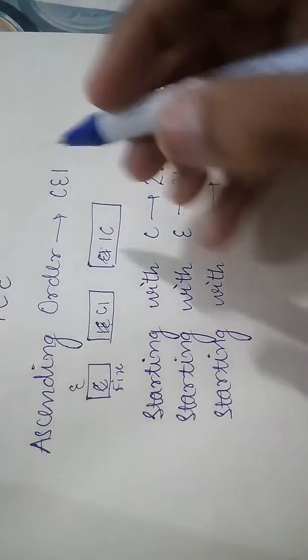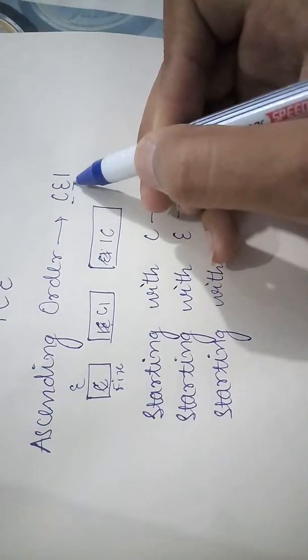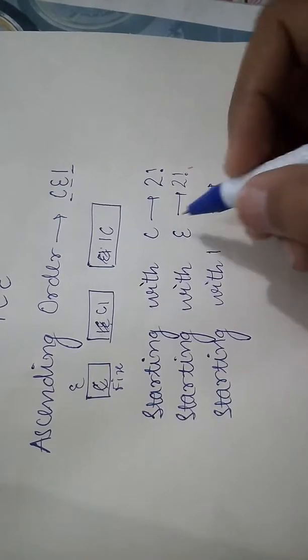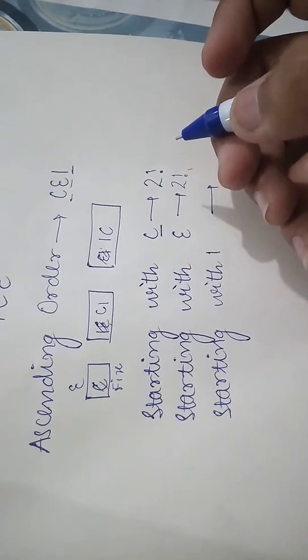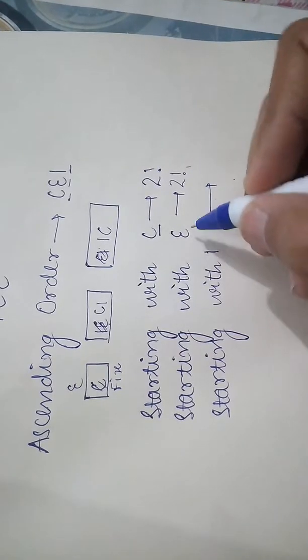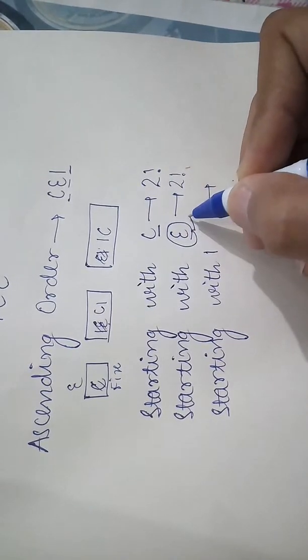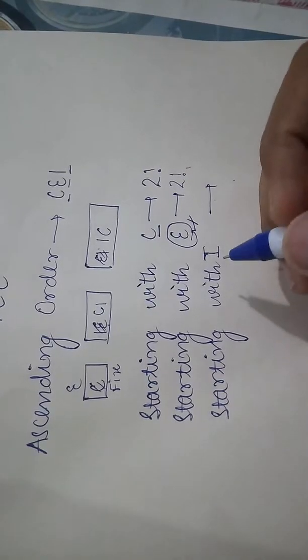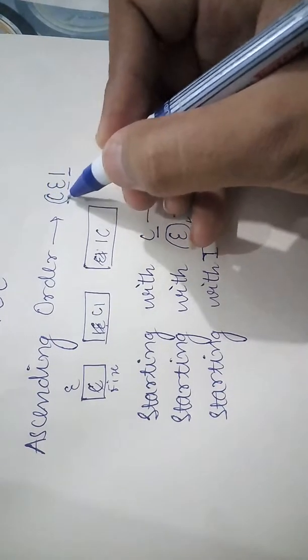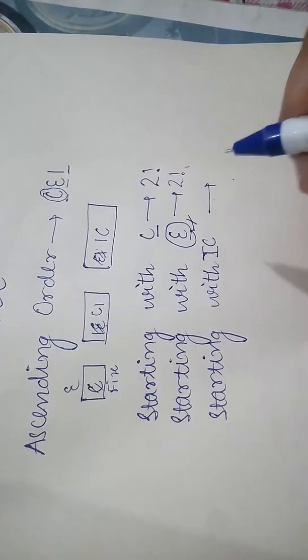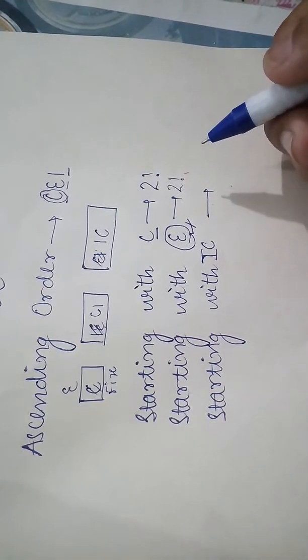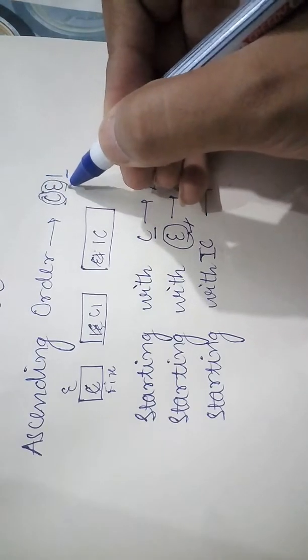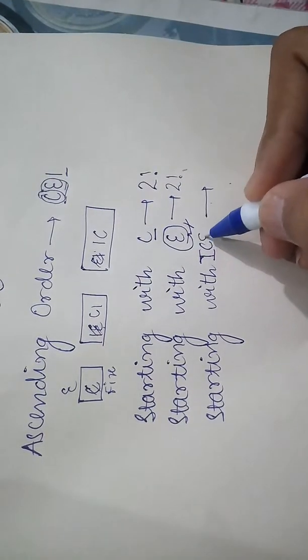Now, we have C also, and E also, and starting with I will come. We have the word starting with I, but we need the word ICE specifically. So, we will take the second letter, that is E.